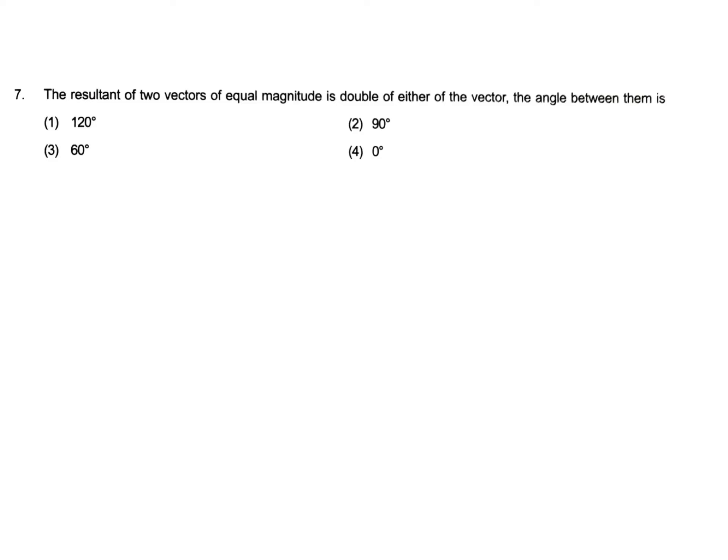The resultant of two vectors of equal magnitude is double of either of the vector, the angle between them is. So we know that resultant means we are adding two vectors. And we know the equation for addition of two vectors when their magnitude is same.